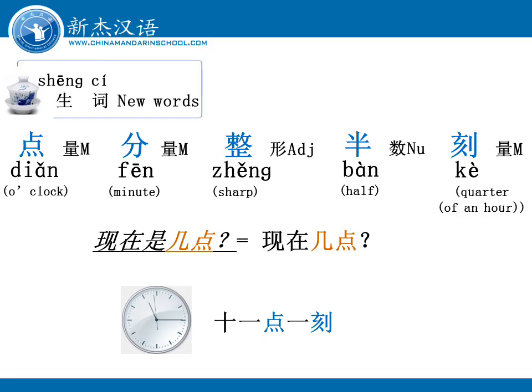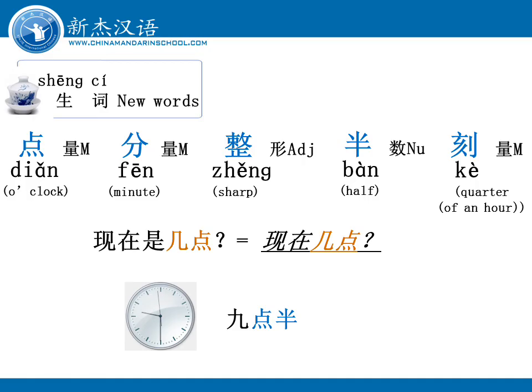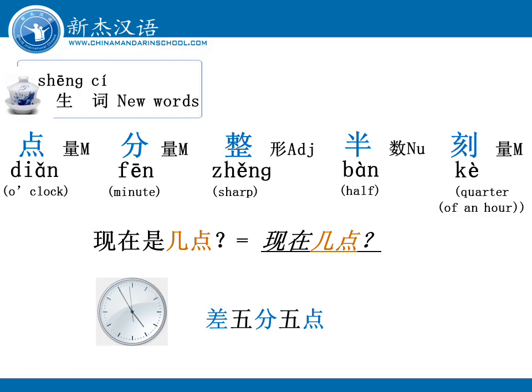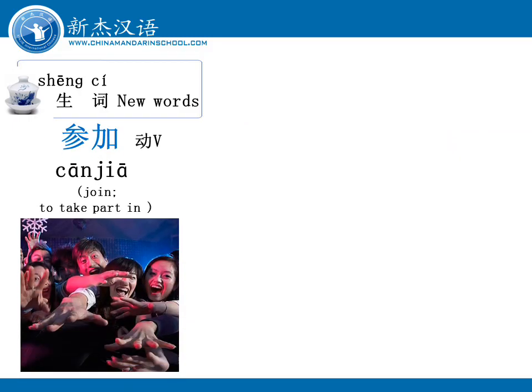现在几点？现在九点过七分。 现在是几点？ 现在几点？ 现在九点半。 现在几点？ 现在是十点四十五分。 现在几点？ 现在差五分五点。